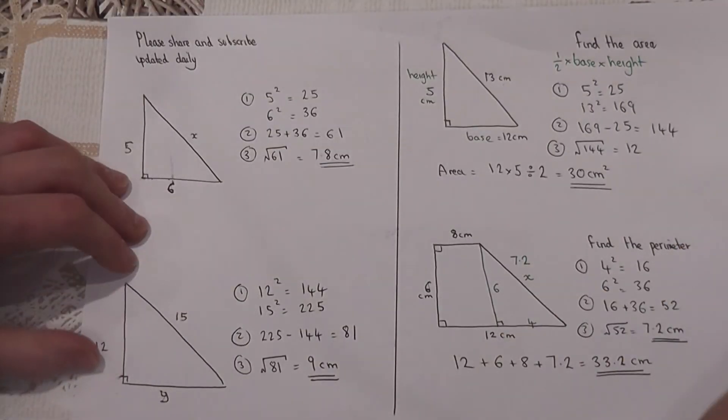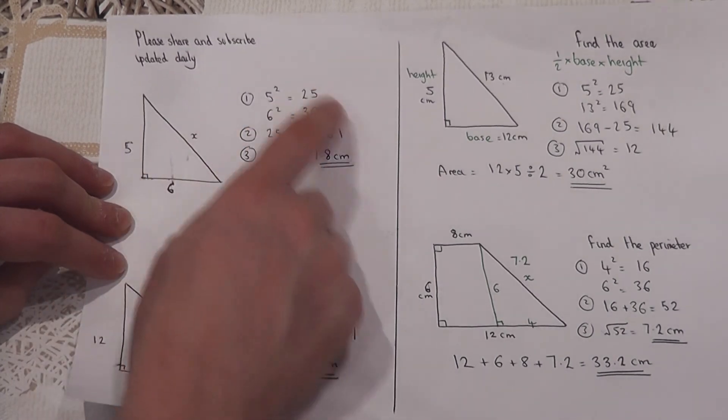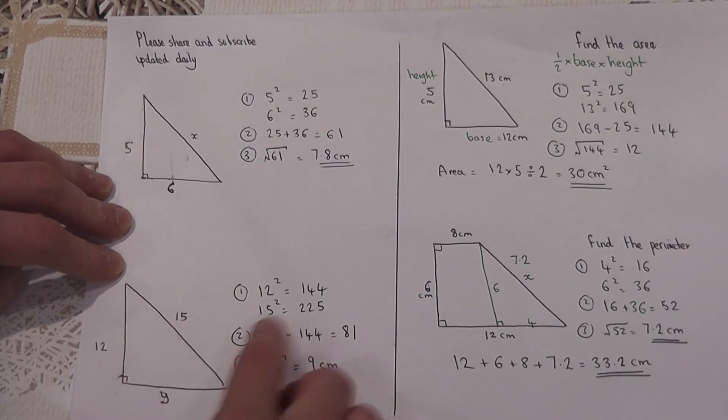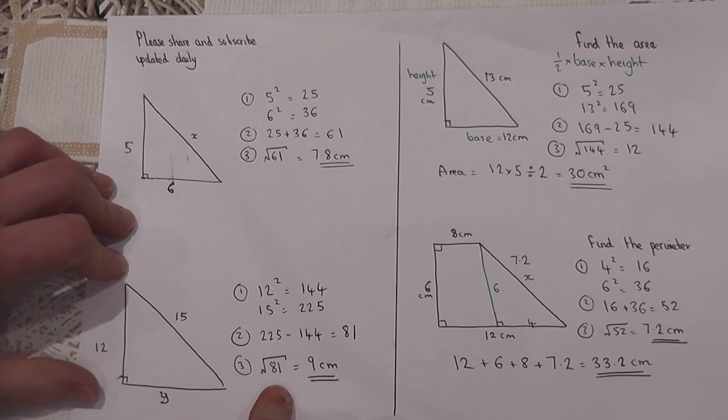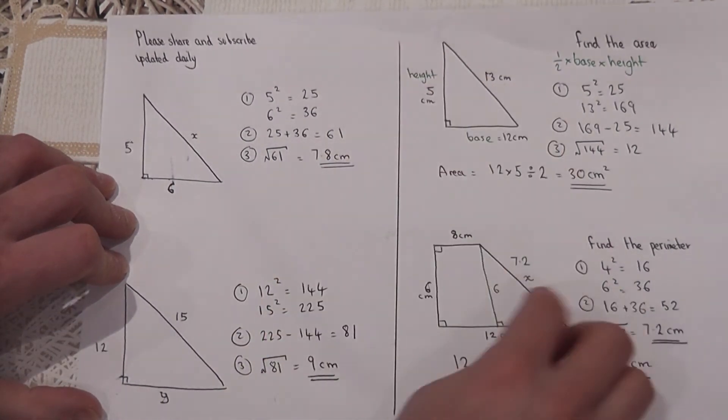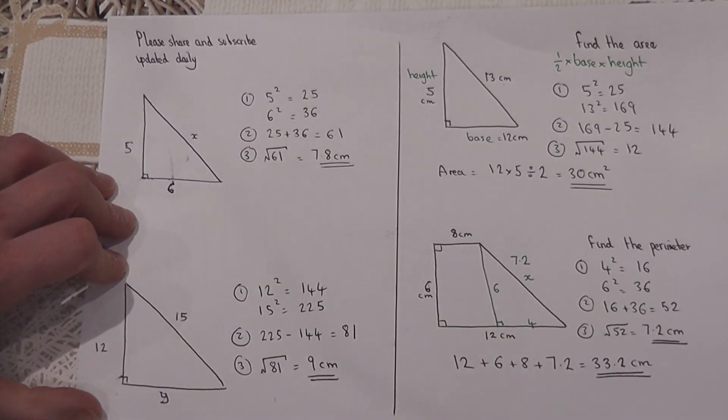Key Pythagoras examples: to find the hypotenuse we square, add, then square root. If we know the hypotenuse, we still square, but we do the bigger one take away the smaller one, and then of course still square root. With problem solving we can look for the right angled triangle and then use the correct application of Pythagoras to solve the problem.